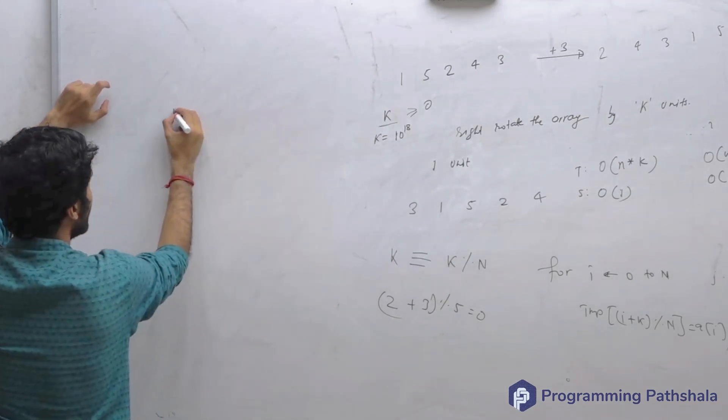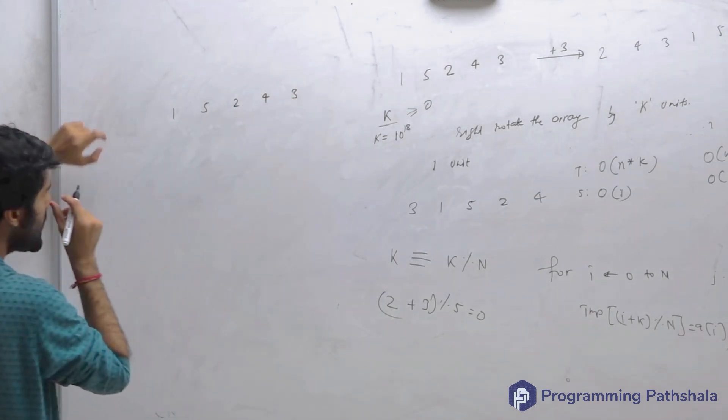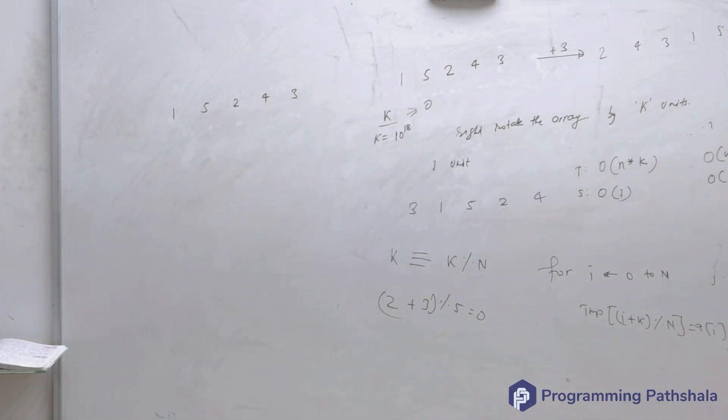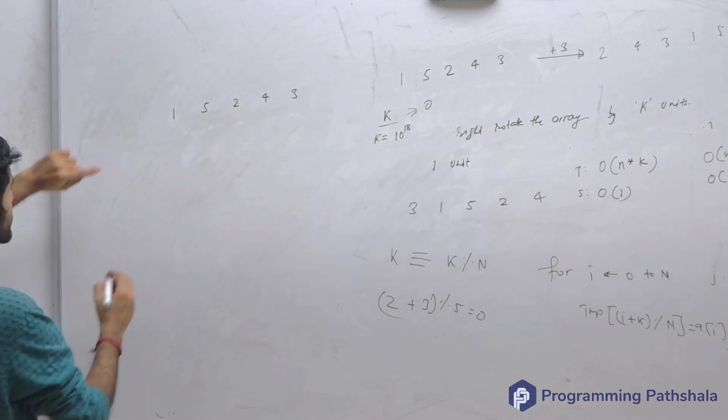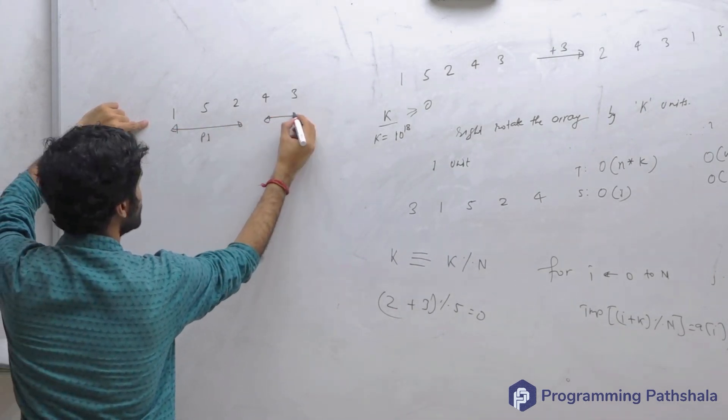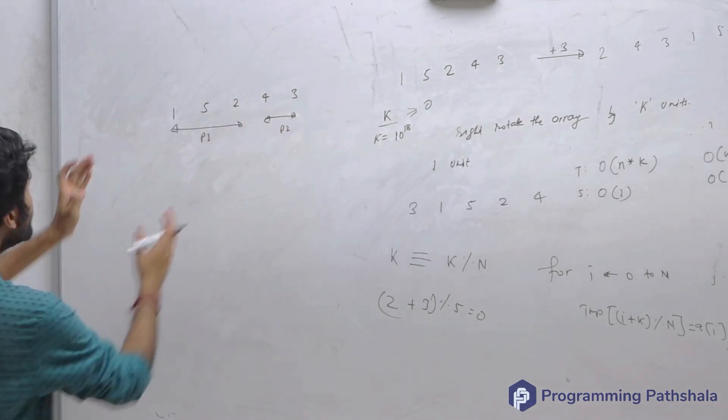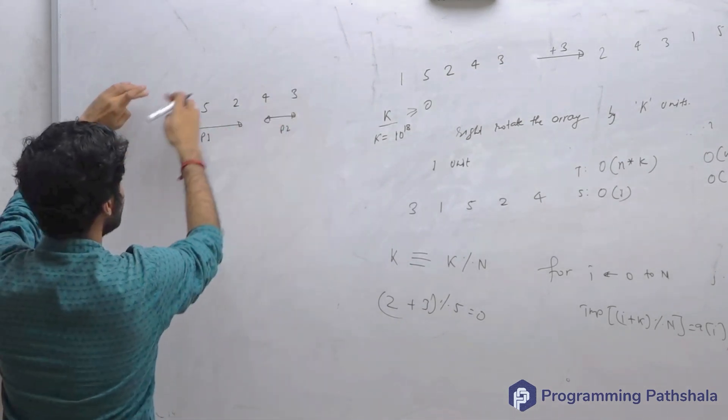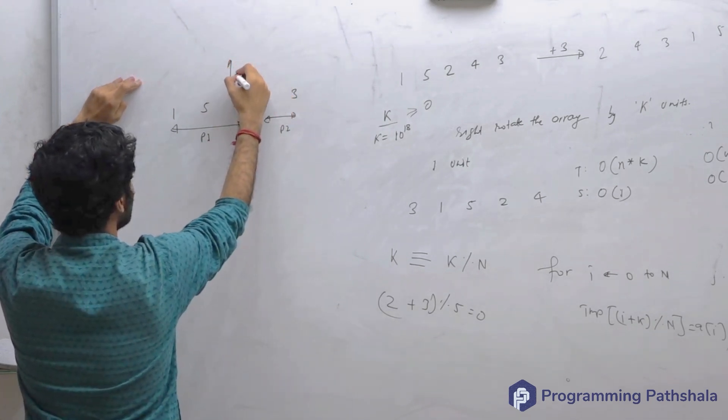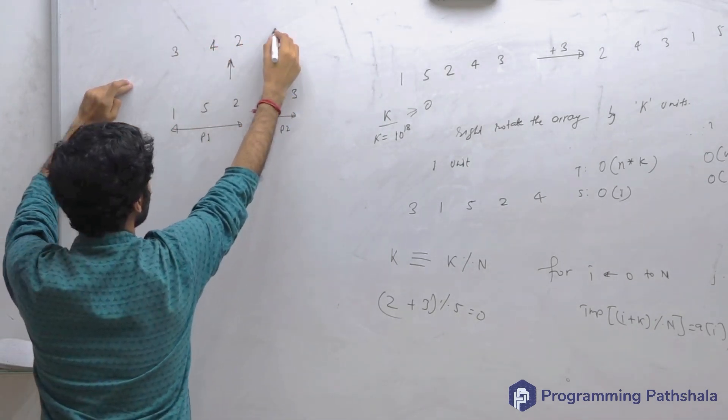like this: 1, 5, 2, 4, 3. If you consider two parts of it - this is part 1 and this is part 2. I just considered any two random parts. If you reverse this array, what do you get? You get 3, 4, 2, 5, 1.